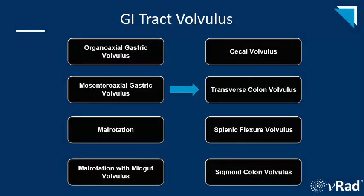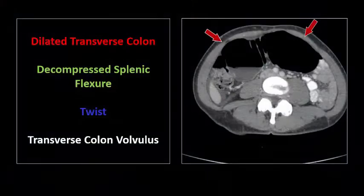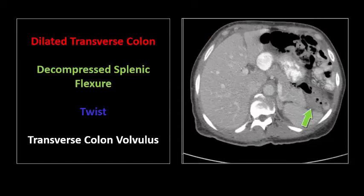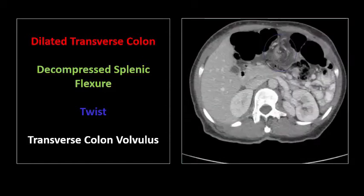Colonic volvulus can occur anywhere, so we're moving on to the transverse colon. Here we see the dilated transverse colon with an air-fluid level, the decompressed splenic flexure, and the twist of the mesentery in the central abdomen, compatible with transverse colon volvulus. Although it's the rarest site of colonic volvulus, accounting for less than 5 to 10 percent of cases, it is associated with the highest mortality. Unlike cecal and sigmoid colon volvulus, there's no classic plain film appearance, so CT is usually your one and only chance to diagnose it.